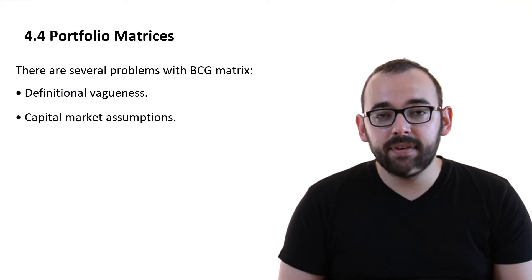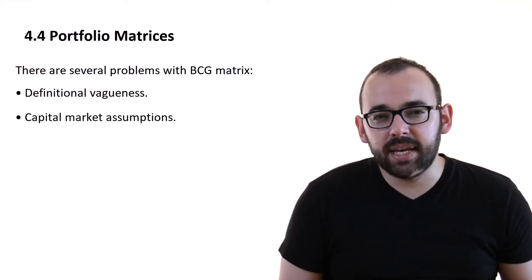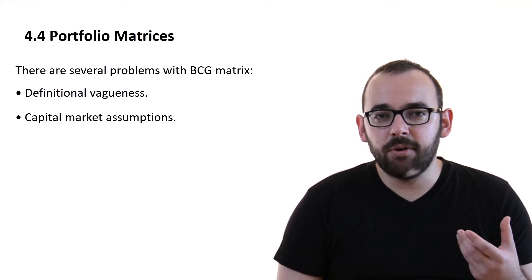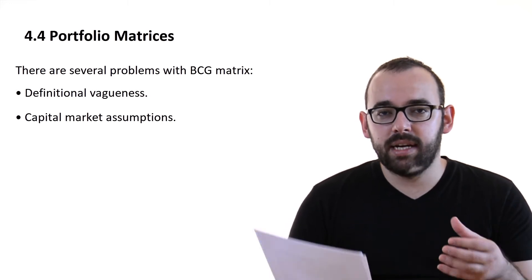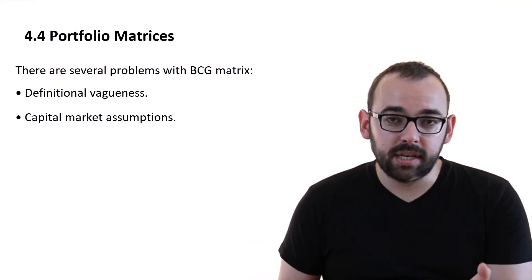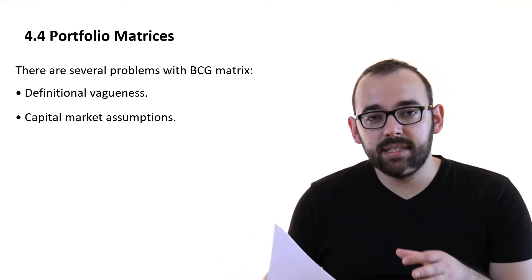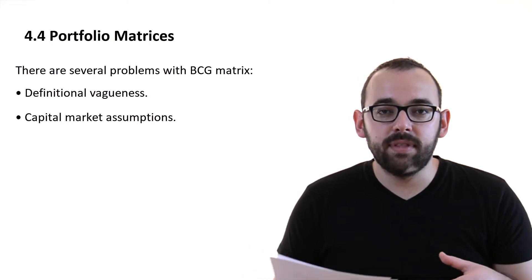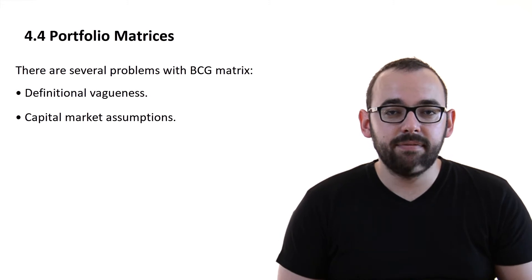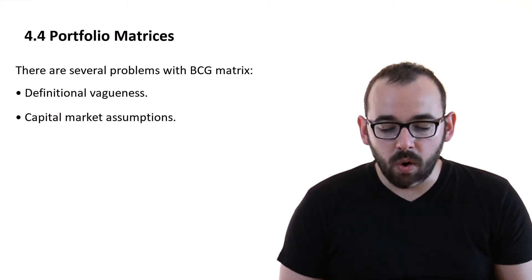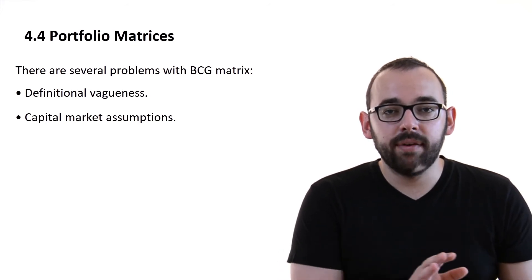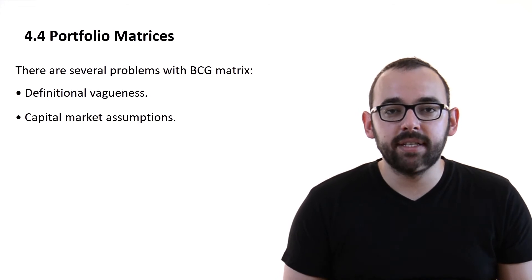Secondly, we have capital market assumptions. Essentially, the BCG matrix assumes that the capital or the cash can only come from internal sources. That there has to be some company from which we are getting the cash, which is the cash cow. We take this cash and use it to finance some of the high potential but currently in loss companies. It's forgetting the idea that maybe we only have the question marks.